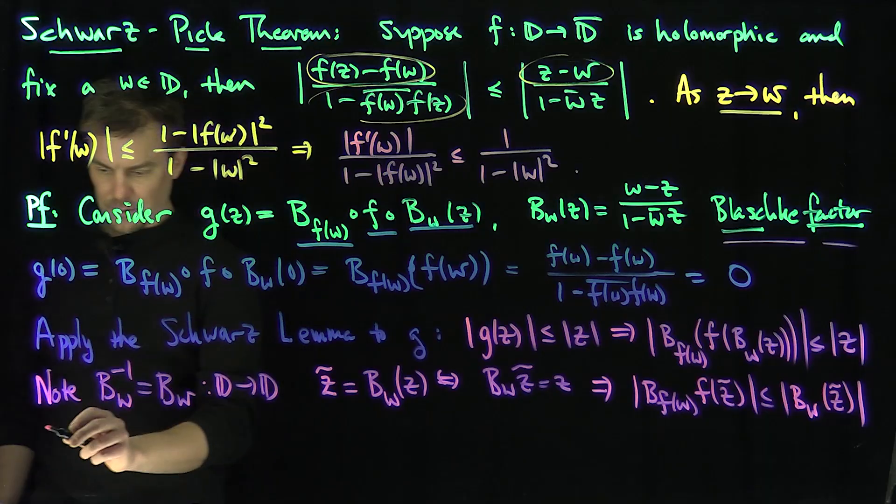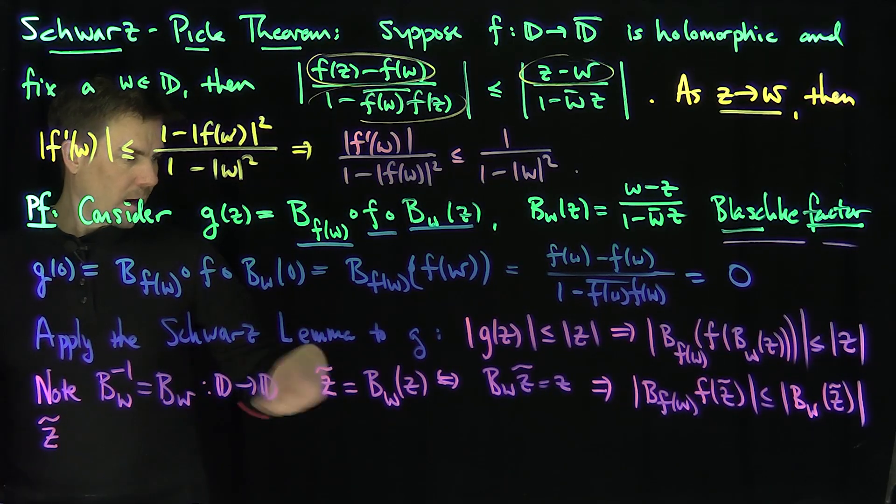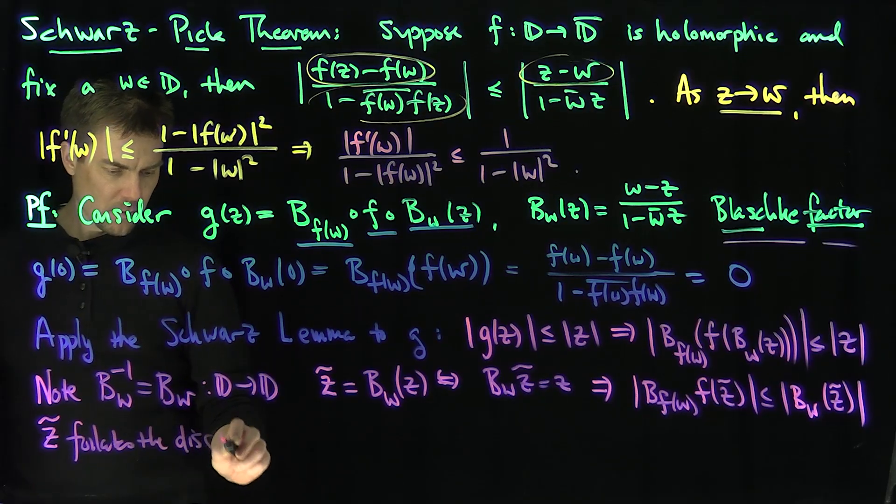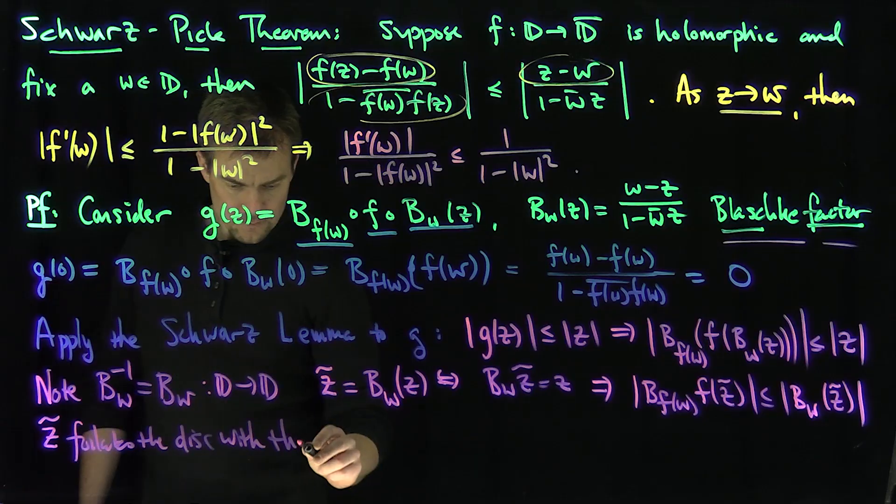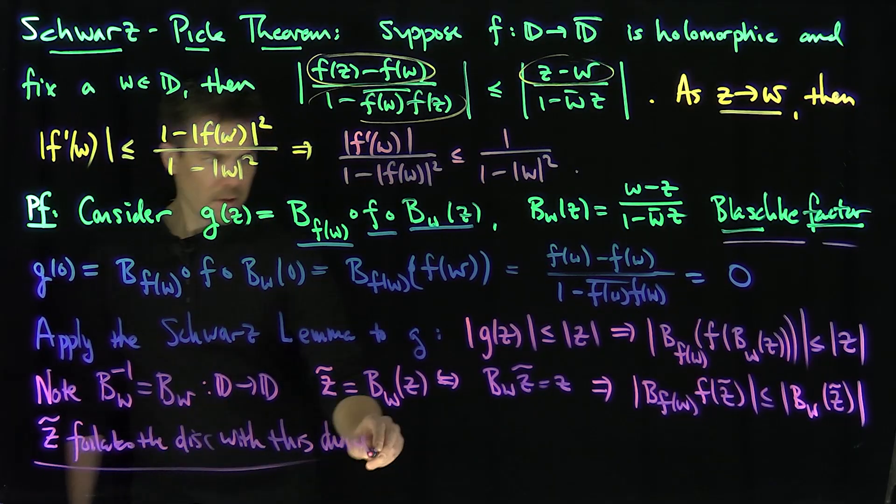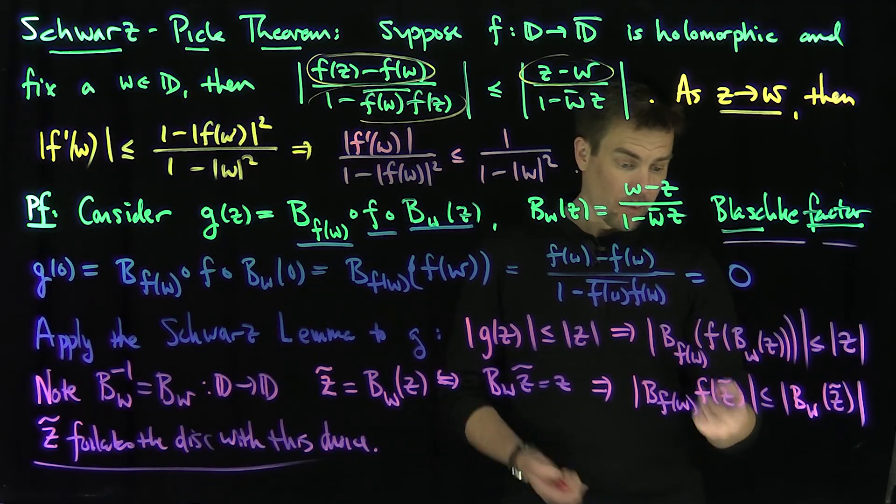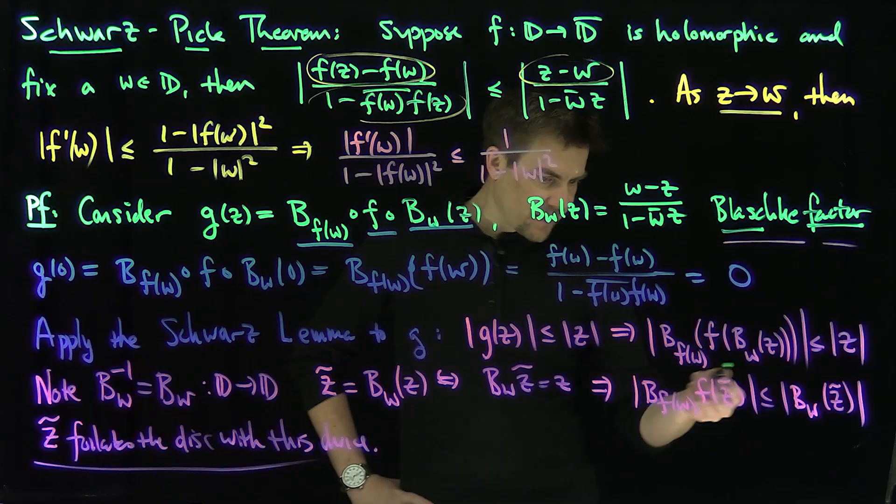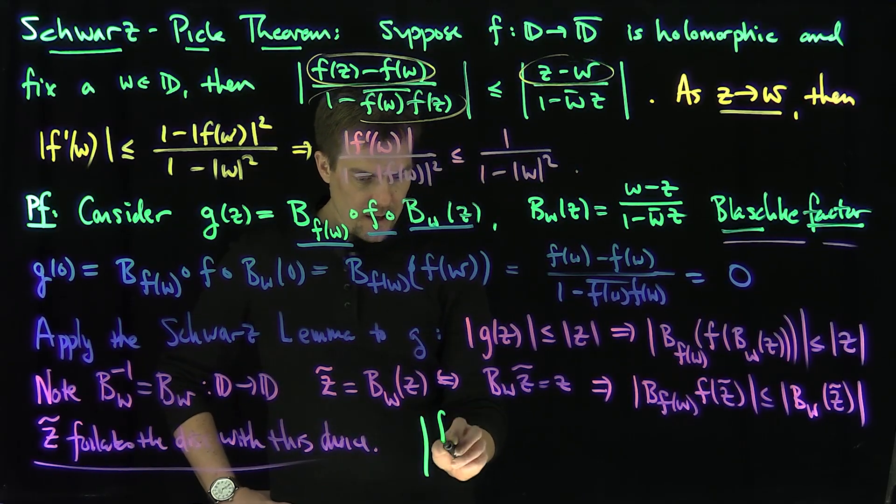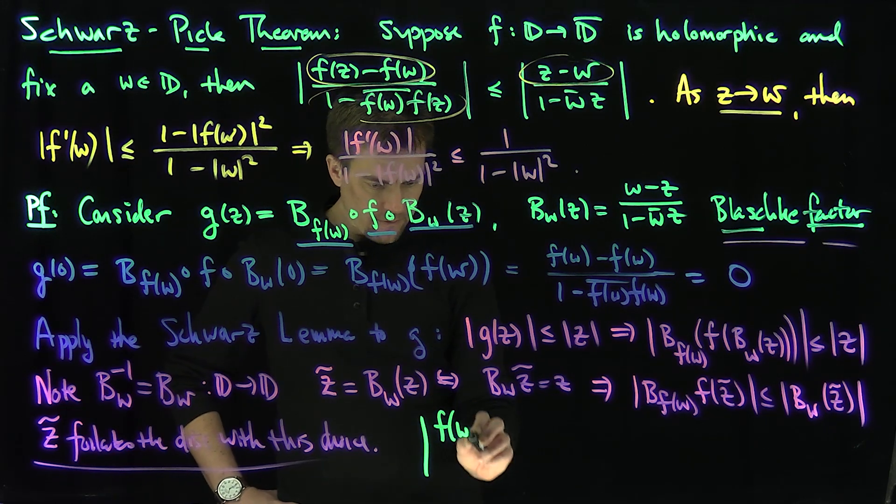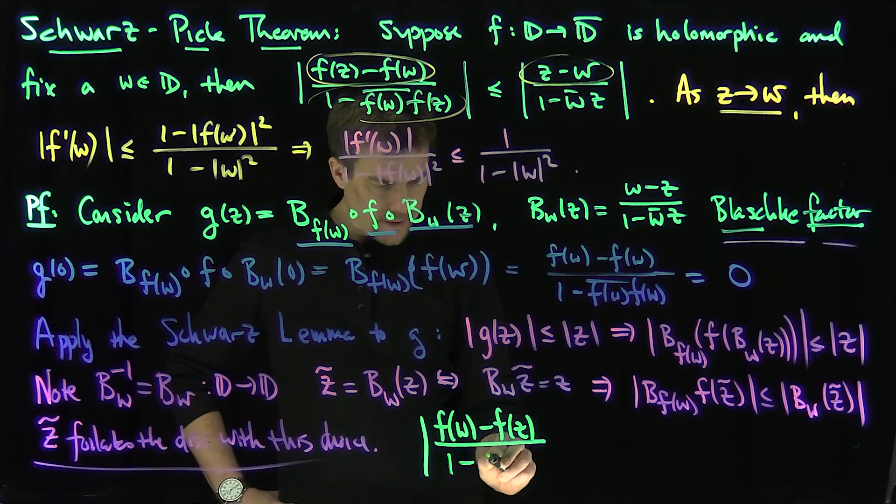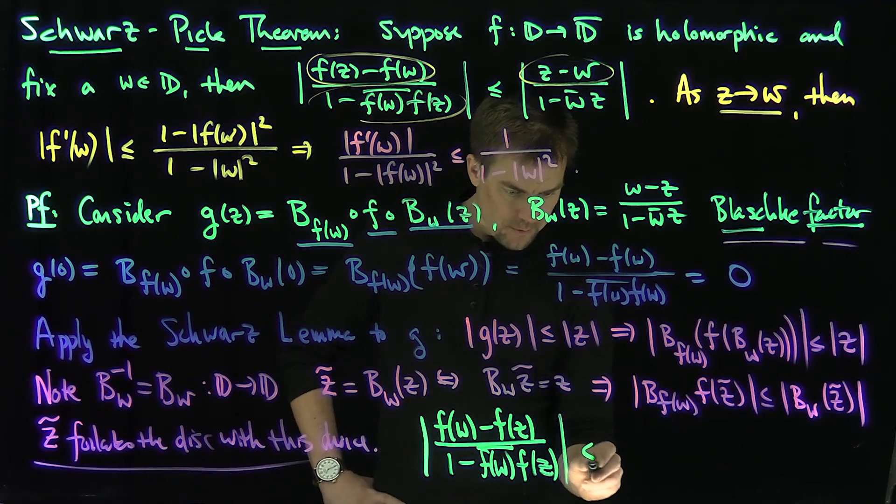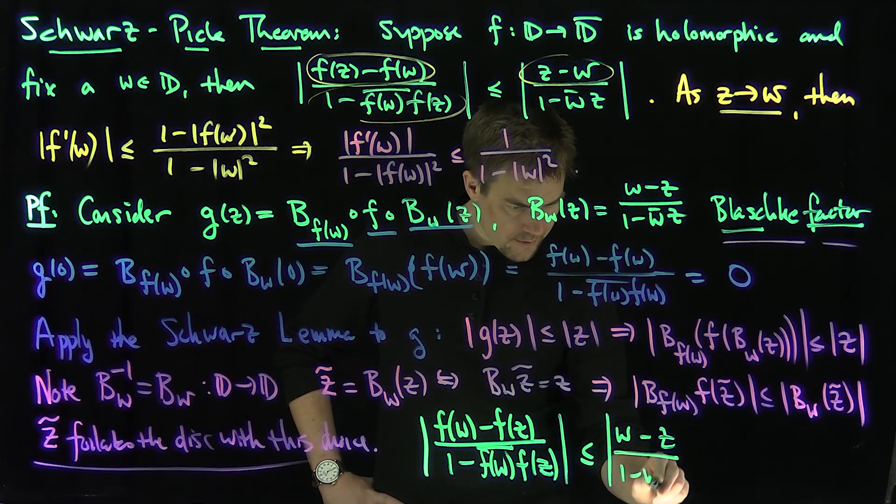Now, z tilde is an arbitrary point of the disk. The choice of z tilde completely foliates the disk. In other words, every single point in the unit disk is of the form z tilde. So now I just rewrite what this says. This is modulus f(w) minus f(z) over 1 minus f(w) bar f(z) is less than or equal to modulus of w minus z over 1 minus w bar z.